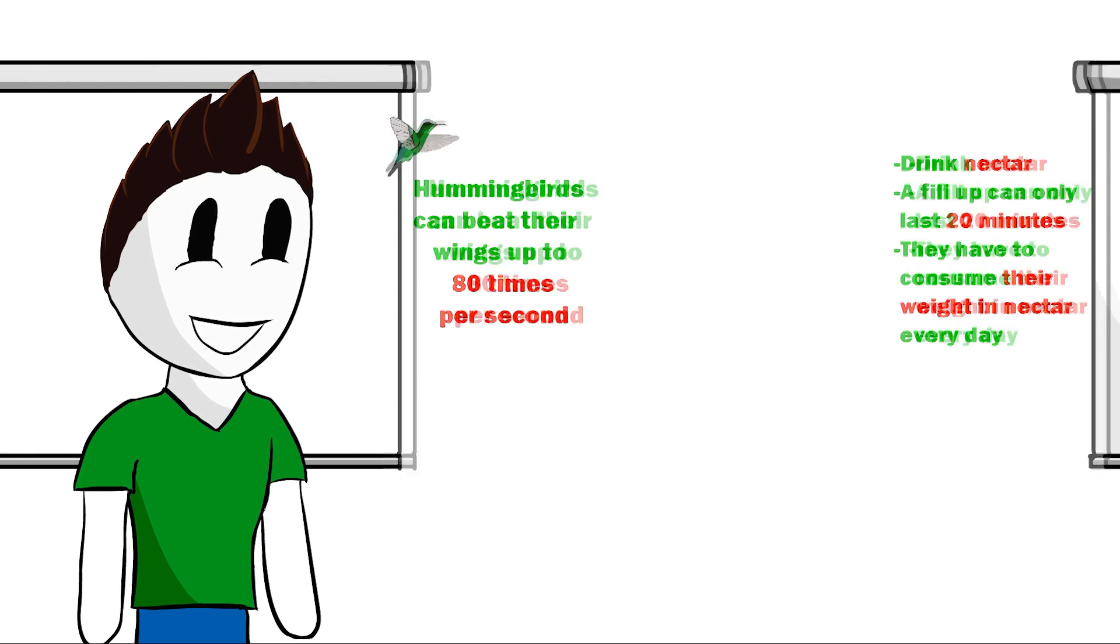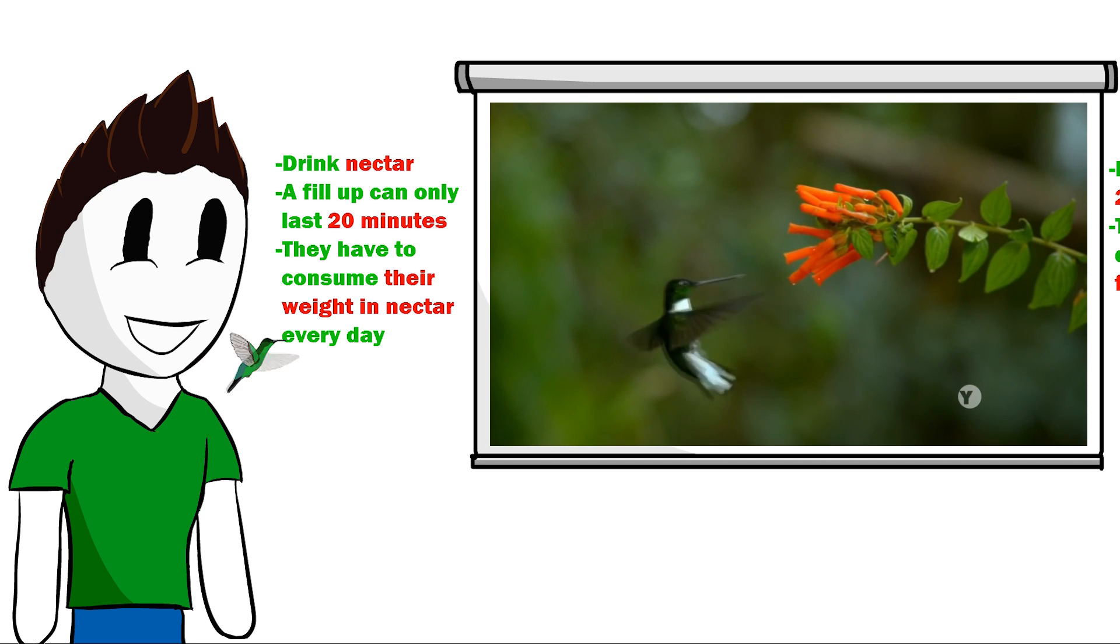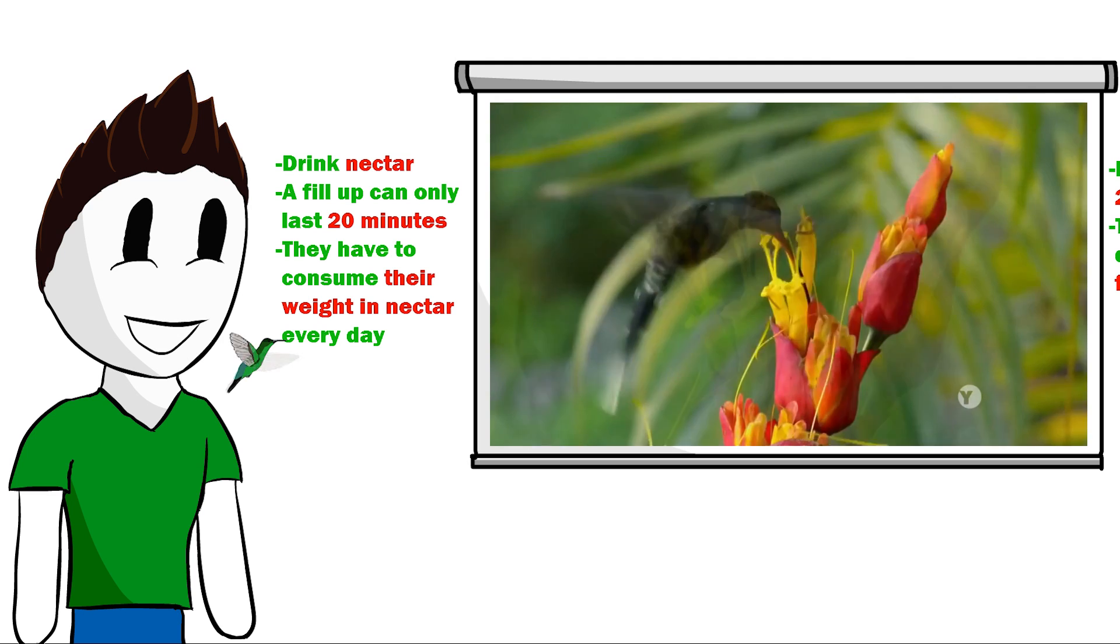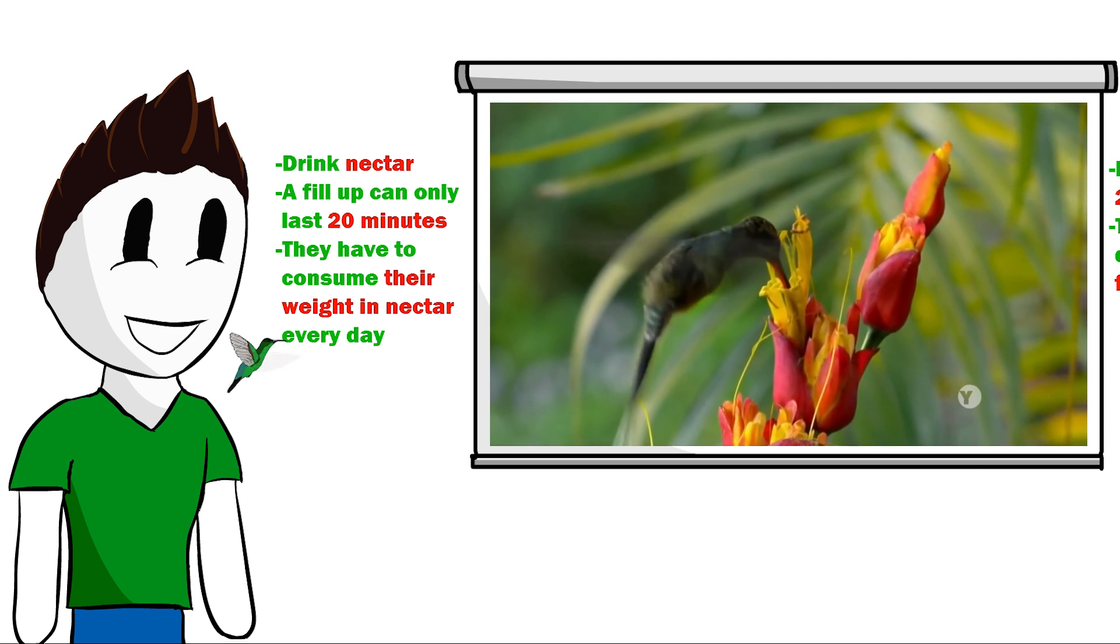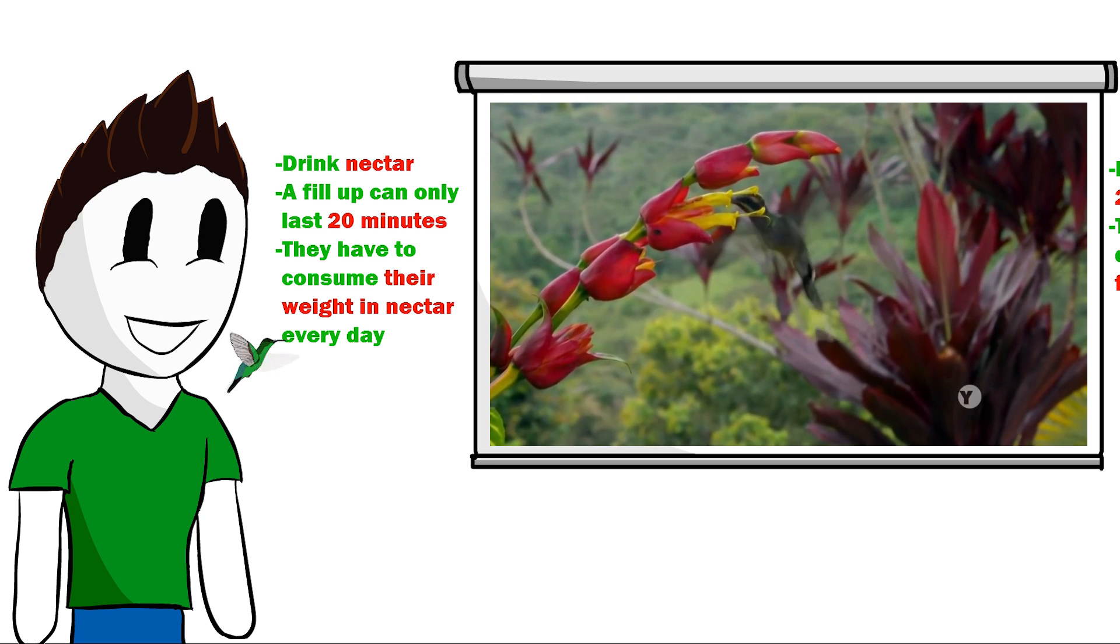When hovering, they have the highest metabolic rate of any vertebrate, which means that they lose a lot of energy. That's why they eat sweet flower nectar, which is rich in glucose, a big source of energy. The nectar is the hummingbird's fuel, but the fuel tanks are very small and the burn rate is so high that the fill-up can only last them 20 minutes.